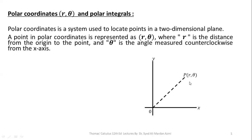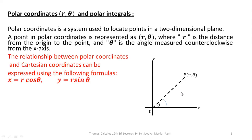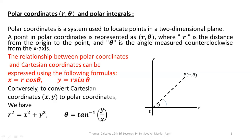Have a look at this diagram. If P is a point in two-dimensional space, then its distance from the origin will provide you the value of R, and the angle made by this line with the positive x-axis in the counterclockwise direction will give you the value of theta. The relationship between polar and Cartesian coordinates is: x = R cos theta, y = R sin theta, and conversely R² = x² + y², and theta = tan inverse of y over x.